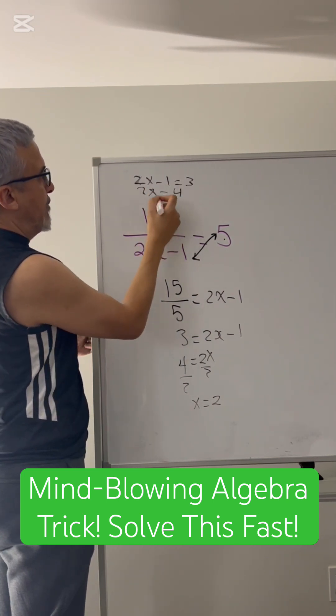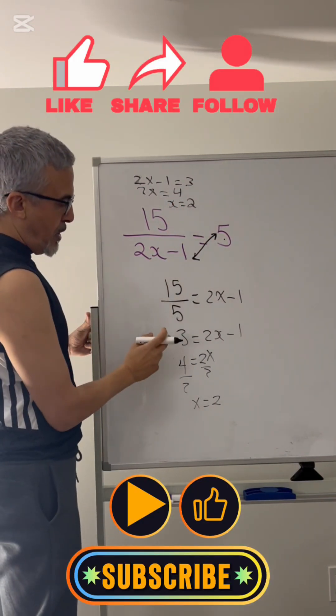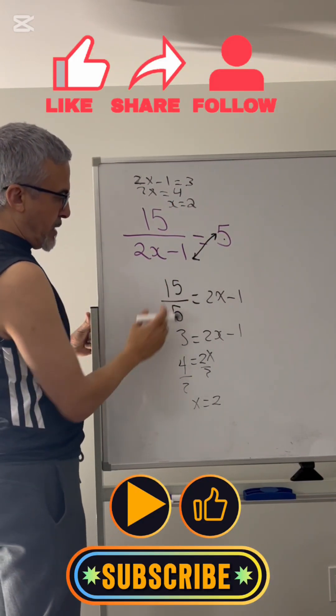Moving negative 1 to the other side, divide both sides by 2, you get x equals 2. But it's good to learn how to cross multiply and move things around in algebra.